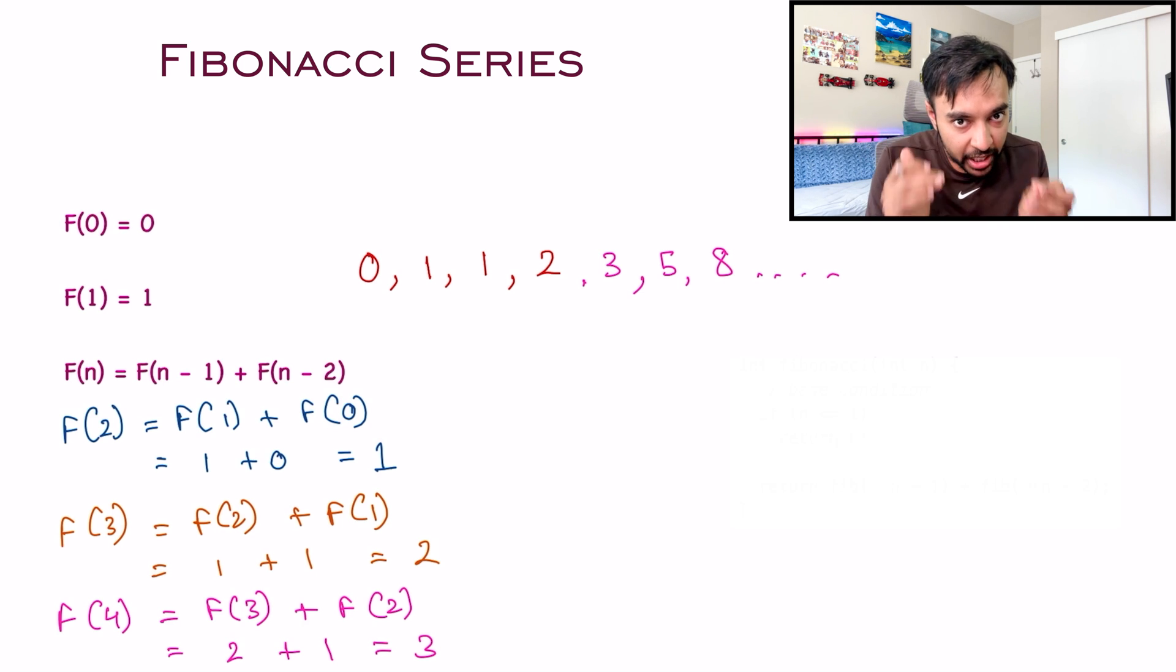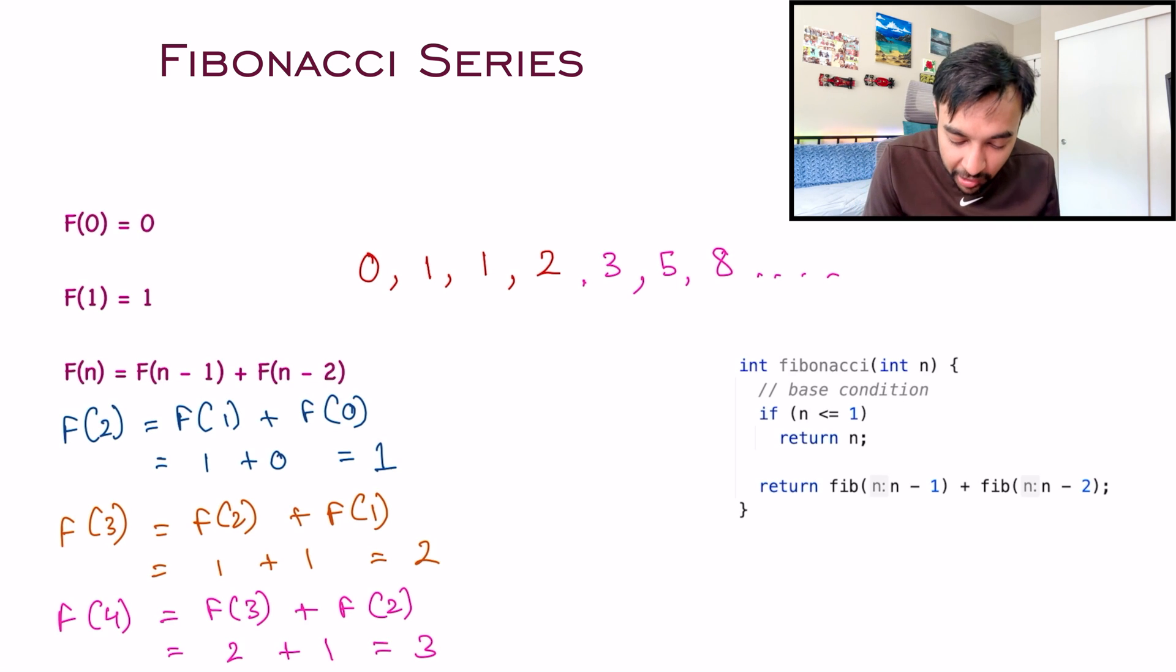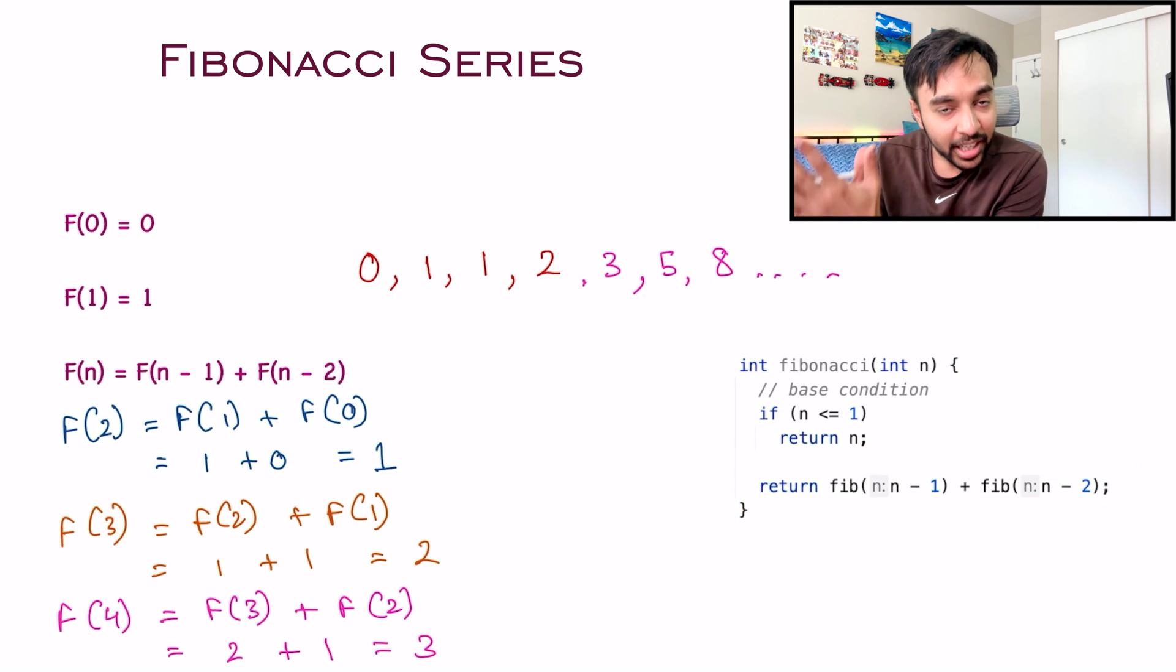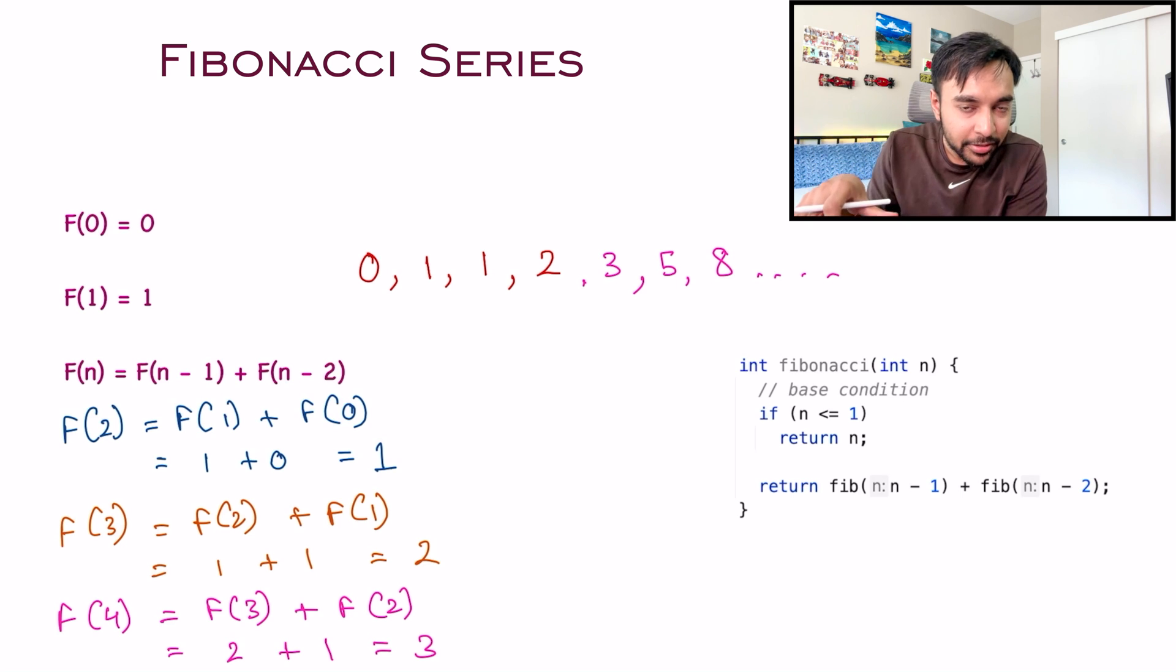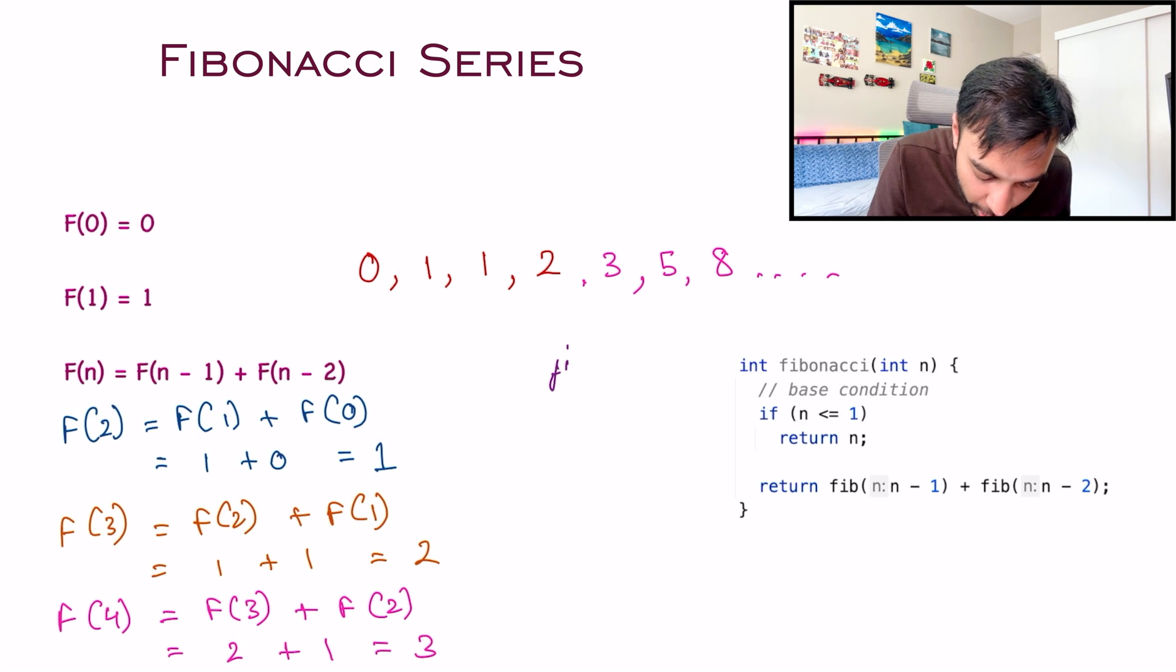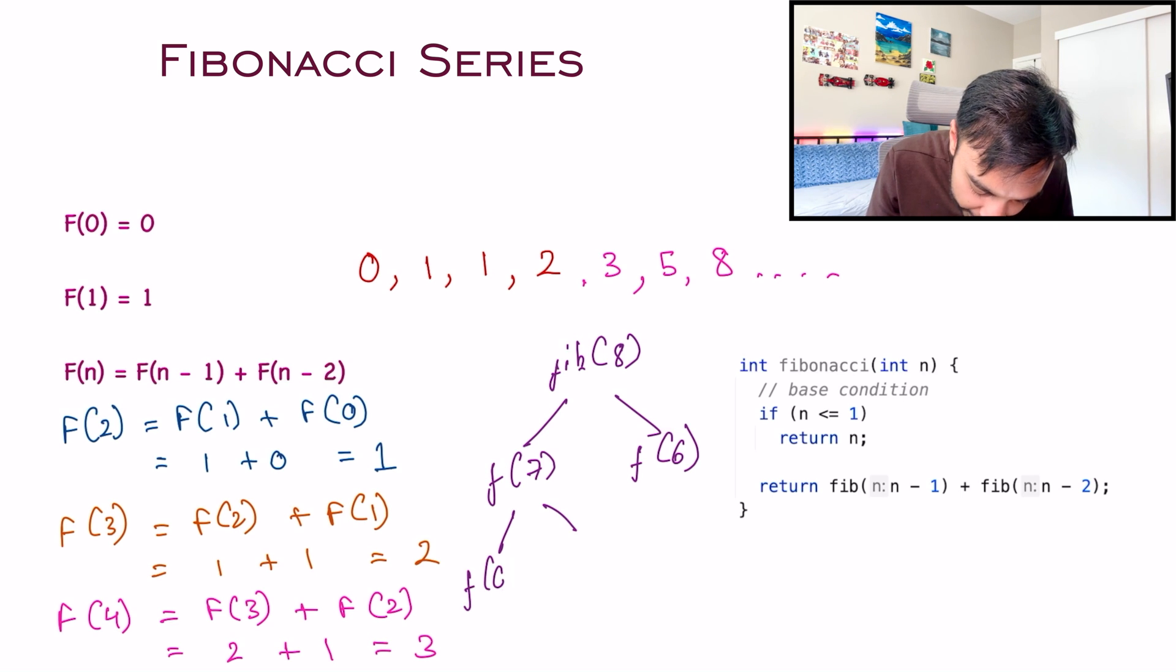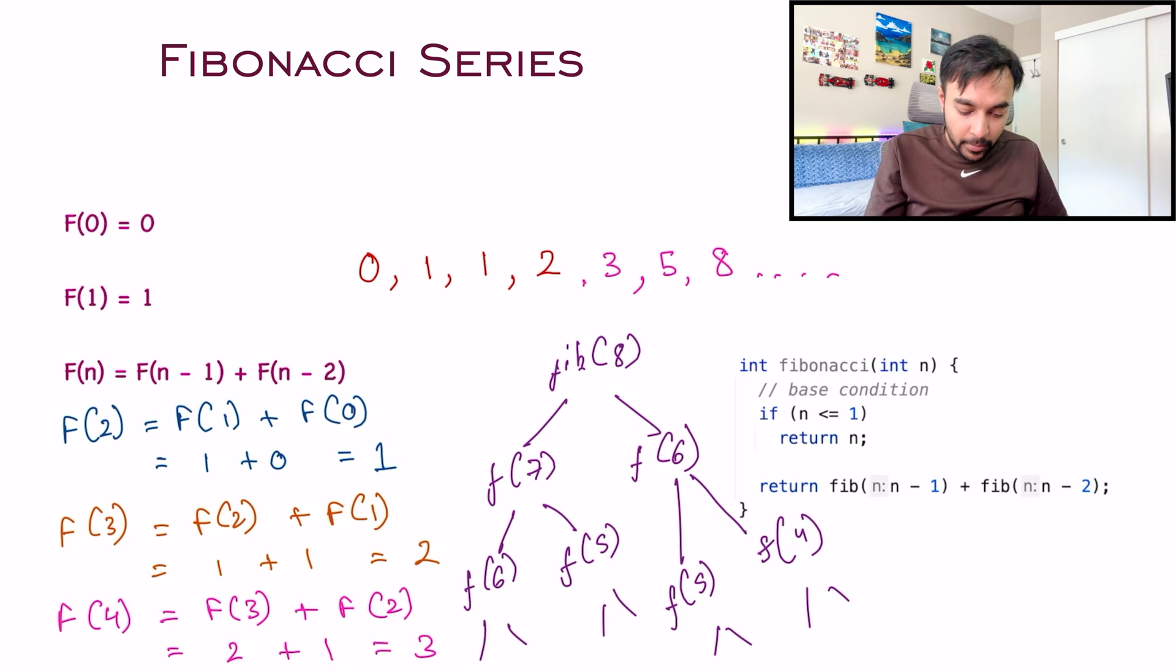If someone asks you to find the nth Fibonacci number, you might be tempted to come up with a solution like this: you return Fibonacci(n-1) plus Fibonacci(n-2). This is a recursive function and will eventually calculate the correct result. But if you approach the problem this way, you're calculating all of the solutions again and again. If you start with Fibonacci of 8, you calculate Fibonacci 7 plus Fibonacci 6. Since this is recursive, you calculate two more values, and this continues.